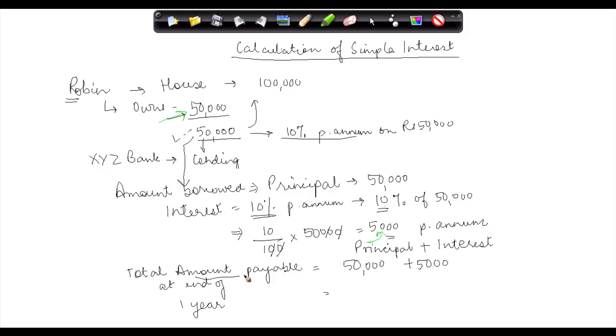And that interest is 5,000. So this amount payable by him is also called as amount in mathematical parlance. You just call it as amount. And amount is basically equal to principal plus interest.